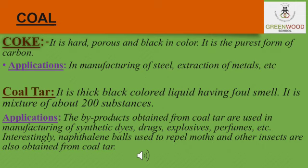The second product of coal is coal tar. Coal tar is the black liquid substance you see being spread on roads while they are being made. It is black in color, a thick liquid with a very unpleasant smell, and is a mixture of about 200 substances. It yields products used as raw materials to manufacture drugs, explosives, and naphthalene balls — which we use to keep moths and insects away. Coal tar is also used in making perfume, synthetic dyes, paints, plastic, roofing material, and photographic material.